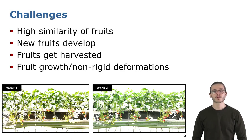However, this approach also comes with its challenges. In fact, changes in appearances within seven days are large and can substantially affect the computation of similarities. Moreover, new fruits can develop while other fruits can get harvested by operators working in the field. Last but not least, strawberries can undergo non-rigid deformation during different growth stages.